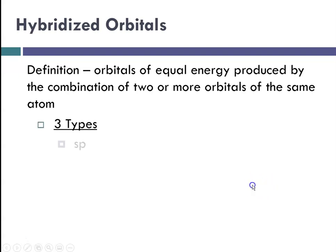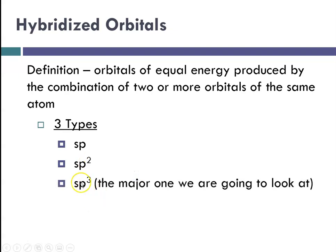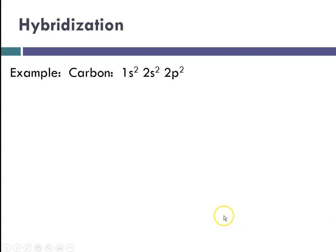There are three types we talk about: SP, which involves 1s and 1p orbital; SP2, involving 1s and 2p orbitals; and SP3, involving 1s and 3p orbitals. An example would be carbon, which has the electron configuration 1s2, 2s2, 2p2. We are concerned here with the two s electrons and the two p electrons.